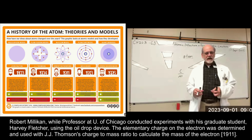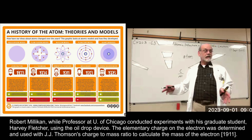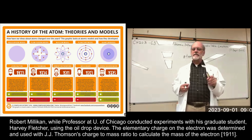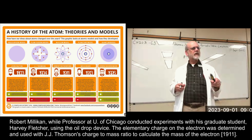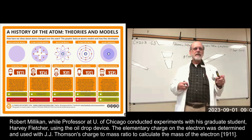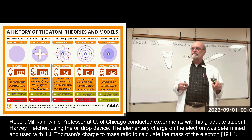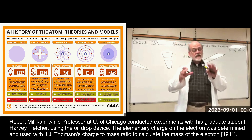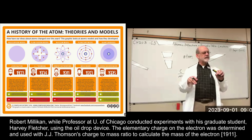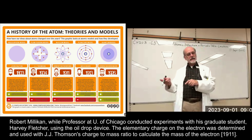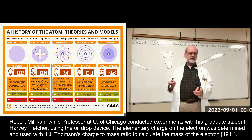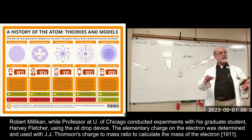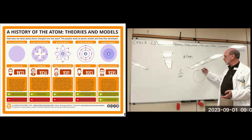The mass was eventually determined by an American. Have you ever heard of the oil drop experiment? Anyway, once the electron was identified, Ernest Rutherford — another English scientist in the beginning of the 20th century — was confronted with the prevailing model for the atom in those days. It was called the plum pudding model.